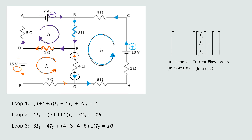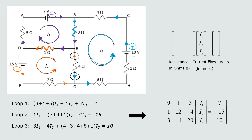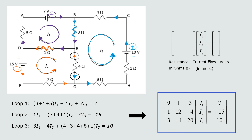Now we have a system of three equations with three unknowns, which we put into a matrix equation: the coefficient matrix [9, 1, 3; 1, 12, −4; 3, −4, 20] times the vector [I1, I2, I3] equals the voltage vector [7, −15, 10]. This is what you will be asked to set up in the case study for lab.